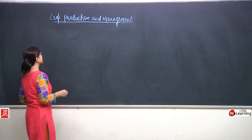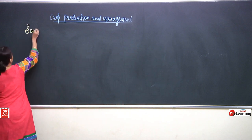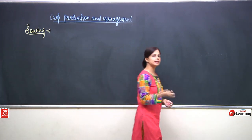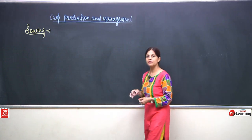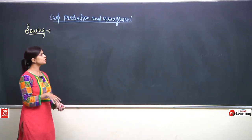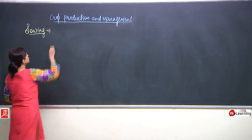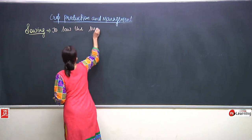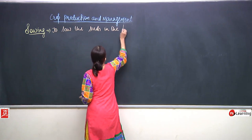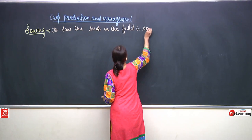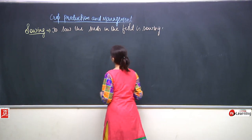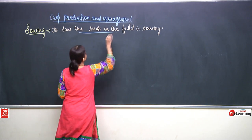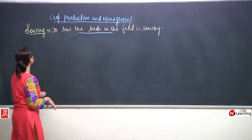We will start with sowing. Sowing means to put the seeds in the field. This is a very important process — until and unless you put the seed inside the soil, nothing is going to grow. So, to sow the seeds in the field is called sowing.